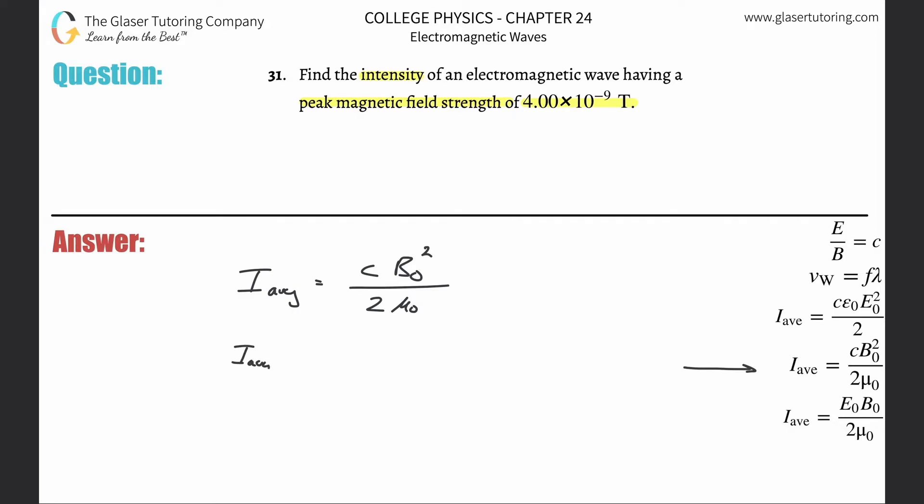So this is a simple plug and chug, as they call it. Three times 10 to the eighth, magnetic field is going to be 4.00 times 10 to the minus ninth Tesla. Square that, divide that then by two times